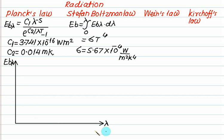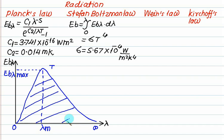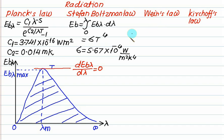This is a graph of Eb_lambda versus lambda. At a particular temperature T, the monochromatic power is maximum at a specific point where Eb_lambda is max. The lambda ranges from 0 to infinity, and the area under this diagram is the total emissive power. This maximum occurs at the condition where d/d_lambda equals 0. This is solved by Wien's law, and if you solve this derivative you get lambda_m times T equals 2.898 times 10 to the power minus 3 meter-Kelvin.